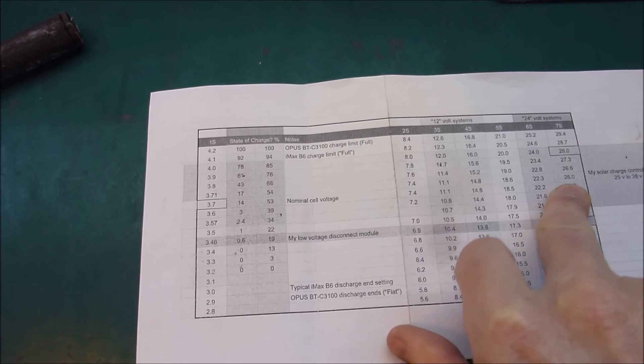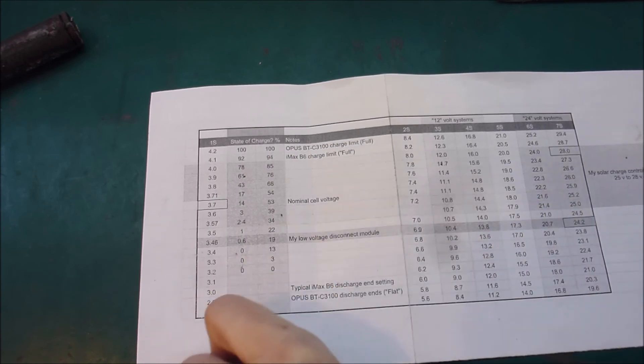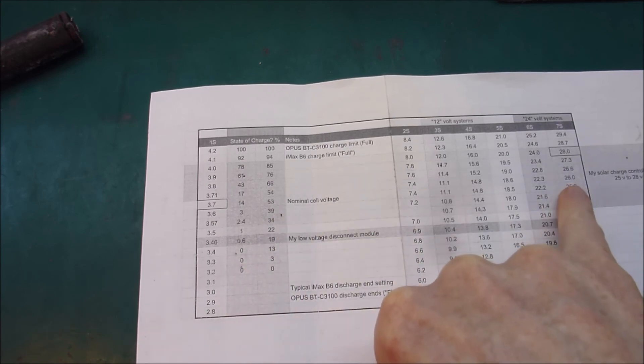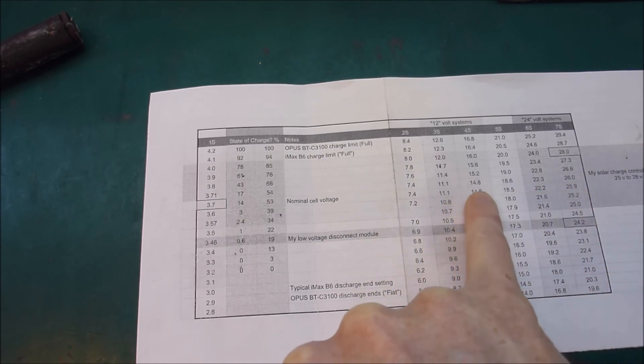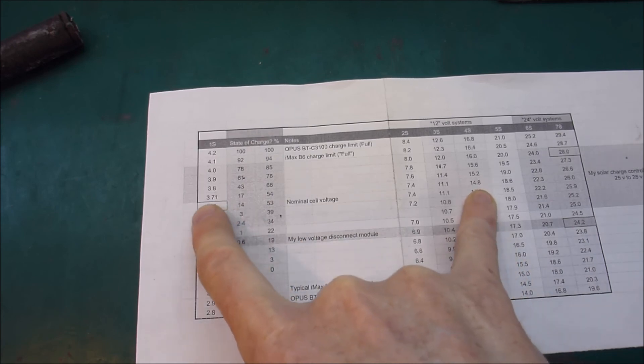So then what I often do is I will disconnect some of my loads and maybe I'll choose not to charge my electric bike from the battery and instead run off the mains and so on. I'll do load management when I get down below 26 volts which would correspond to 14.8 on a 4S pack or 3.71 volts on a single pack.